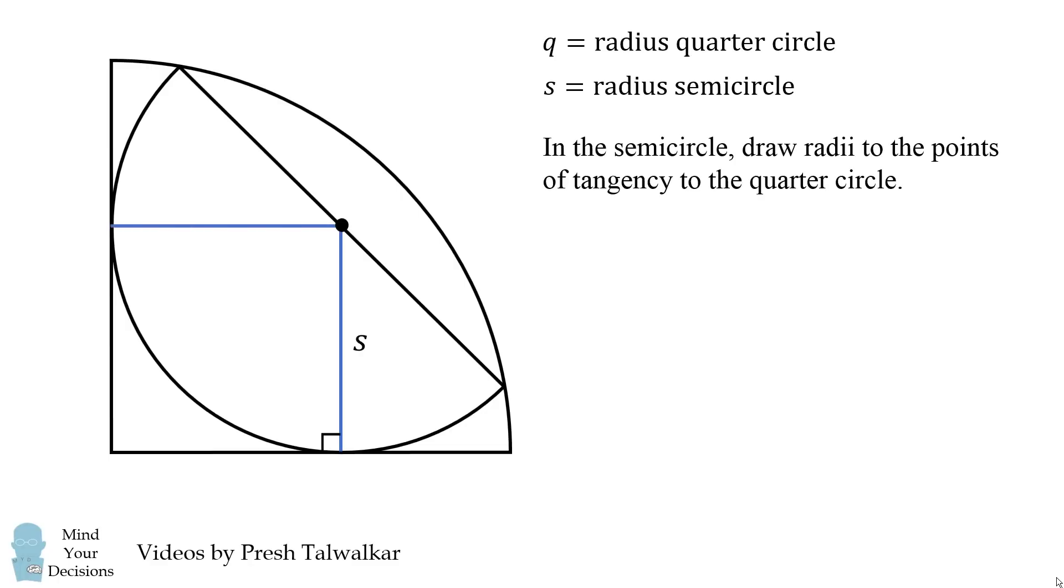Now we can also draw this line segment, which will also be tangent and will also have the value s. Since the quarter circle is 90 degrees, this is also a right angle, and therefore in this quadrilateral, all of the angles must be right angles, which means this shape defines a square. So all sides are equal to s.